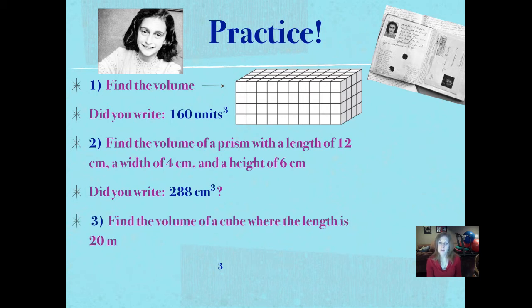Number 3. Find the volume of a cube where the length is 20 meters. We've got to use what we know about cubes to figure this one out. We're still going to use the formula. Pause it and push play when you've figured it out and written it down. Did you write 8,000 cubic meters? Remember, we have to make sure that our unit of measure matches what's in the description and the question. 8,000 cubic meters because in a cube, every side is the same length. So the length is 20, the width is 20, and the height is 20. 20 times 20 is 400. 400 times 20 is 8,000.